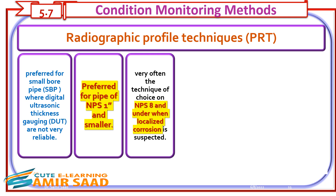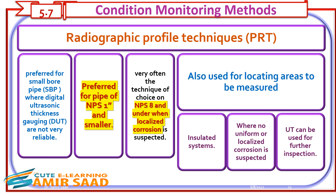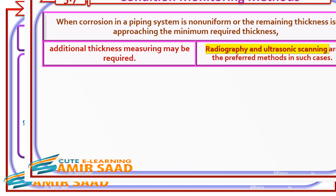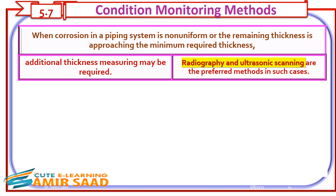Radiographic profile techniques (PRT) are preferred for small bore pipe where digital ultrasonic thickness gauging is not very reliable. PRT is preferred for pipe of NPS 1 inch and smaller, and is very often the technique of choice on NPS 8 and under when localized corrosion is suspected. It is also used for locating areas to be measured in insulated systems where non-uniform or localized corrosion is suspected; UT can then be used for further inspection.